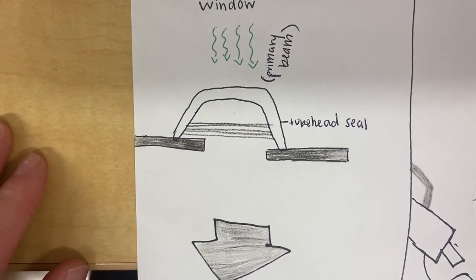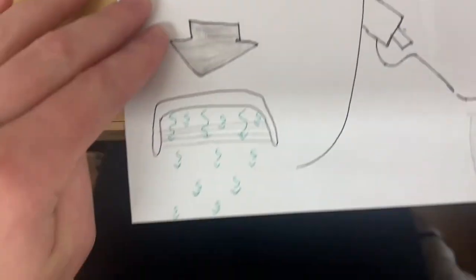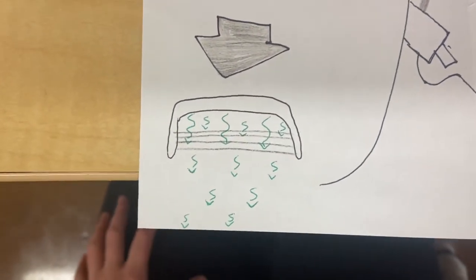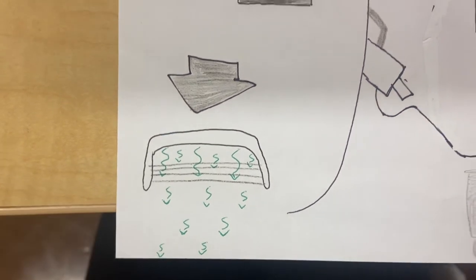They will then go through the aluminum disc filters, as you can see here, which will get rid of the long wavelength X-rays and leave the short wavelength X-rays untouched.